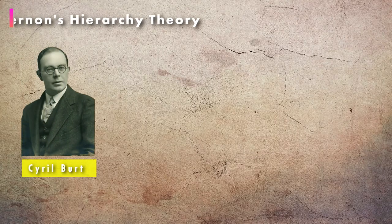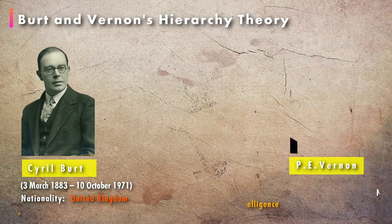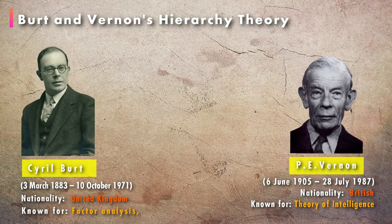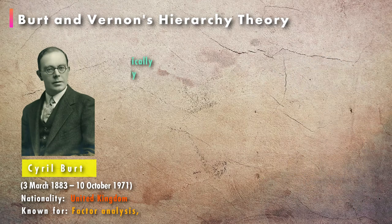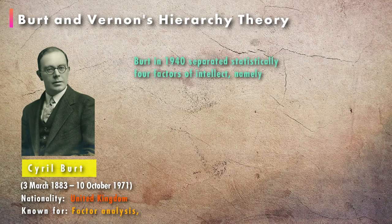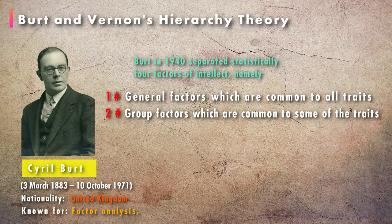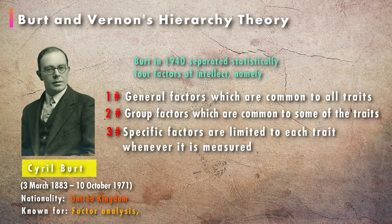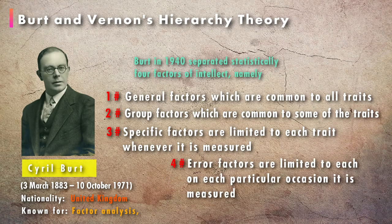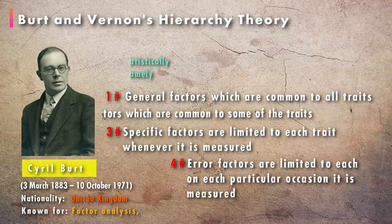British psychologists like Keidel, Barth, and Vernon gave an alternative scheme for the organization of factors. Barth in the 1940s statistically separated four factors of intellect: general factors, which are common to all traits; group factors, common to some traits; specific factors, limited to each trait whenever it is measured; and error factors, limited to each particular occasion it is measured.